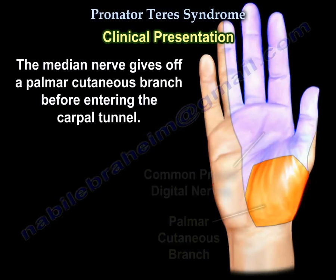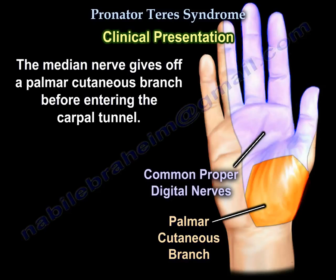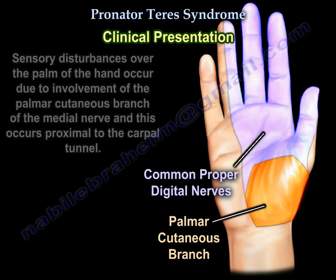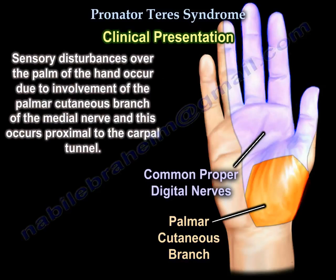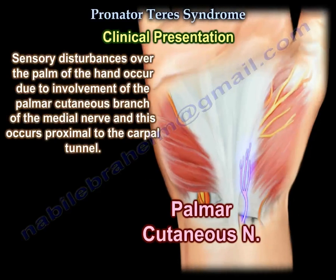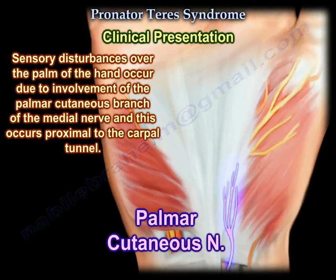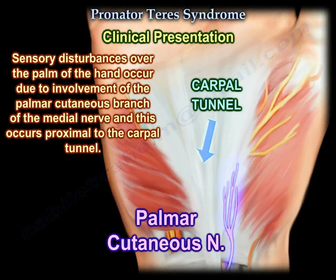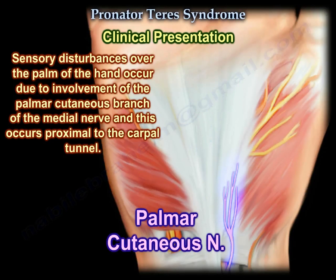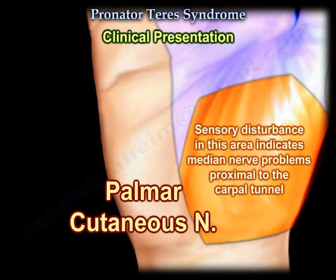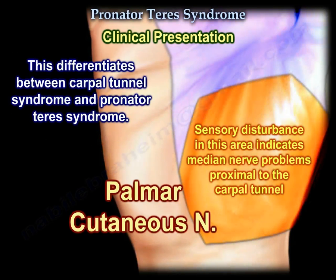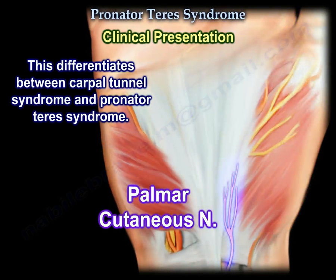The median nerve gives off a palmar cutaneous branch before entering the carpal tunnel, so sensory disturbances over the palm of the hand occur due to involvement of the palmar cutaneous branch of the median nerve, proximal to the carpal tunnel itself. Sensory disturbance in this area indicates median nerve problems proximal to the carpal tunnel, and this differentiates between carpal tunnel syndrome and pronator teres syndrome — an important point.